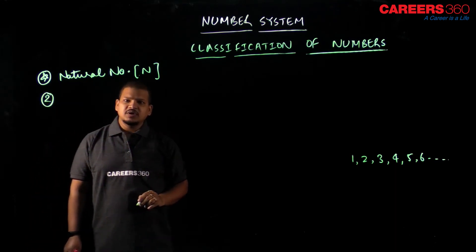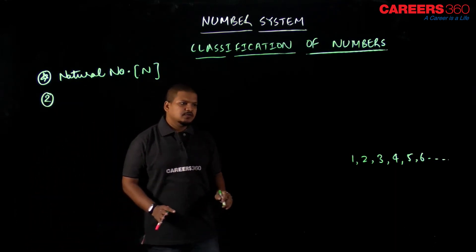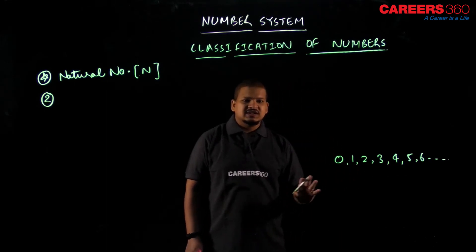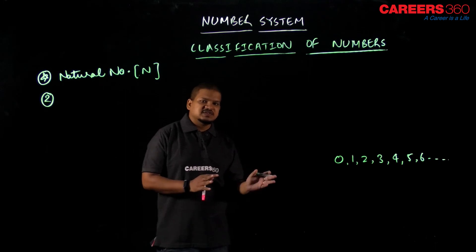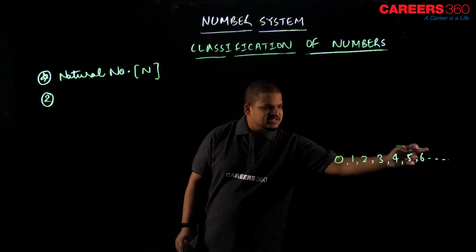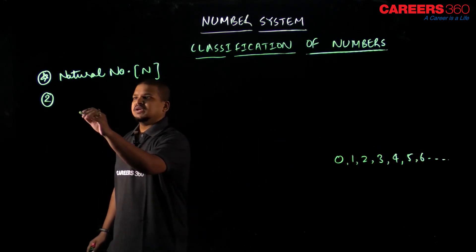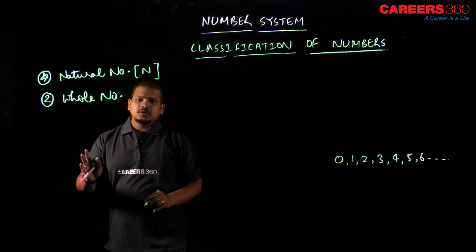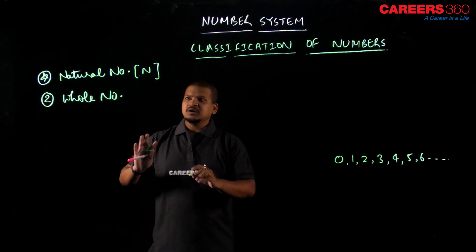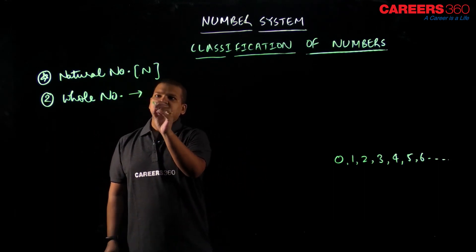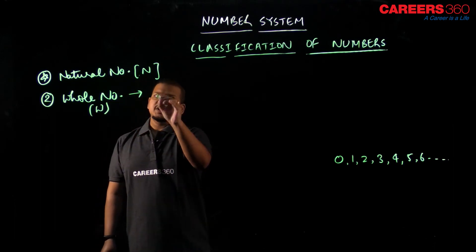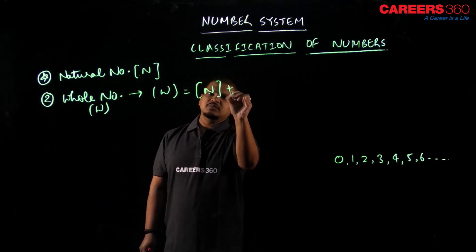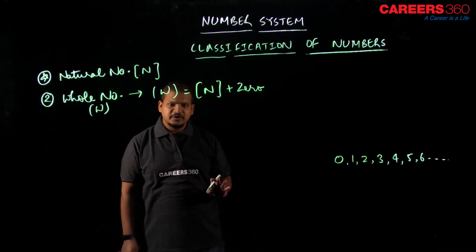Let's proceed to the second type of number. What if I include 0 in this set — 1, 2, 3, 4, 5, 6 with 0 included — this set will be nothing but whole numbers. If I represent whole numbers by W, then W will be nothing but all the natural numbers plus 0.